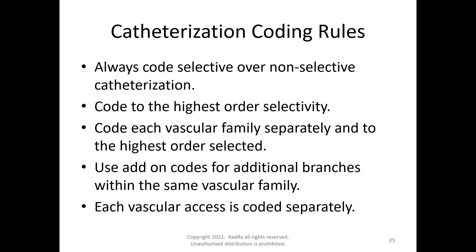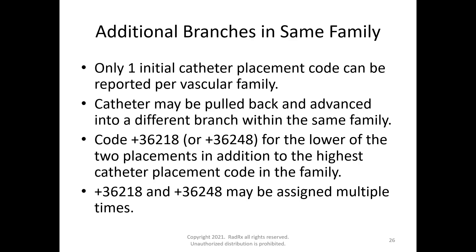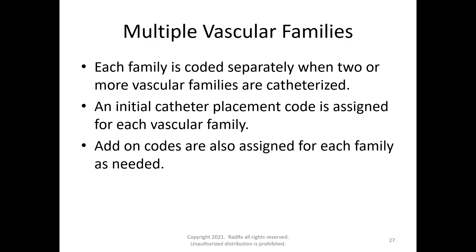Each vascular access is coded separately. When you have additional branches in the same family, you only report one initial catheter placement per vascular family — meaning one code such as 36215, 36216, or 36217 based on the furthest catheter advancement, or 36245, 36246, or 36247 below the diaphragm. Then use add-on codes if the physician pulls the catheter back and advances into a different branch within the same family. Add-on codes can be reported multiple times.